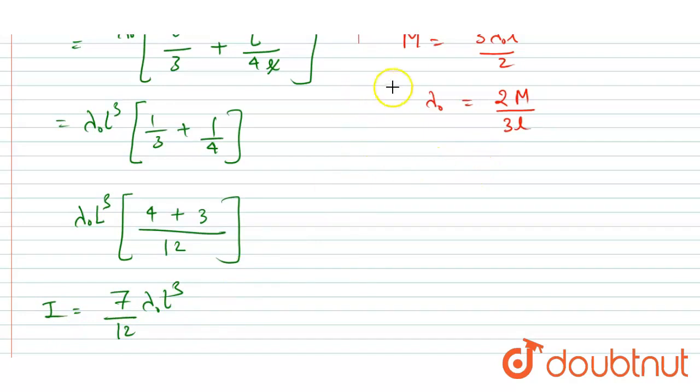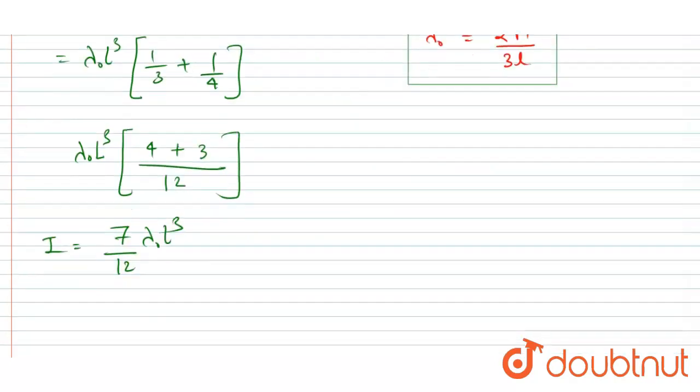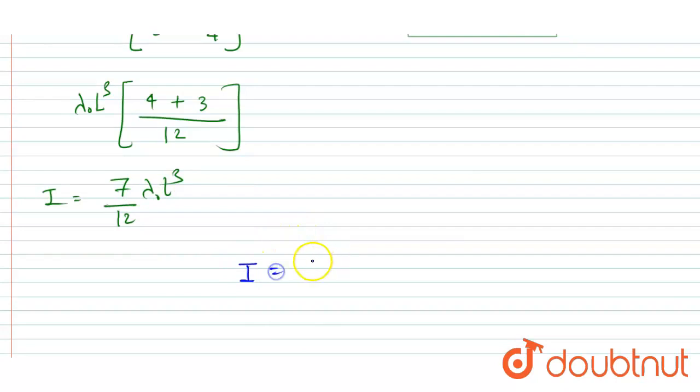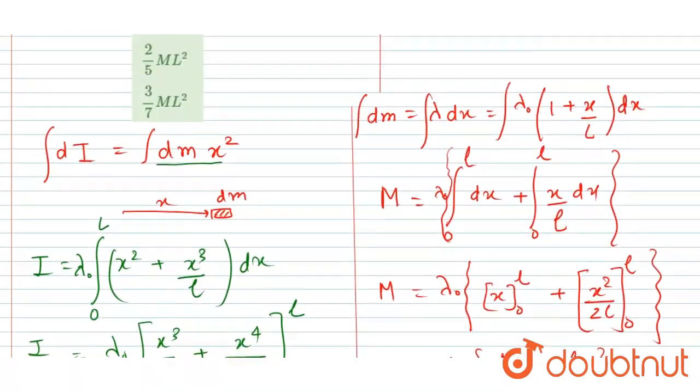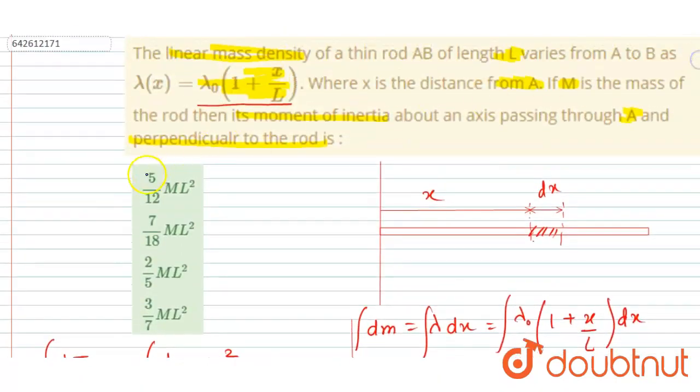Now we already calculated the value lambda naught equals 2M by 3L. So I will write I equals 7 by 12, lambda naught is 2M by 3L, times L cube. So this will be cancelled out by 2 and you will cancel this by 6, and you will get 7 by 18 ML square. And this will be our answer. Now you can see 7 by 18 ML square is B option. So B is the correct option. Thank you.